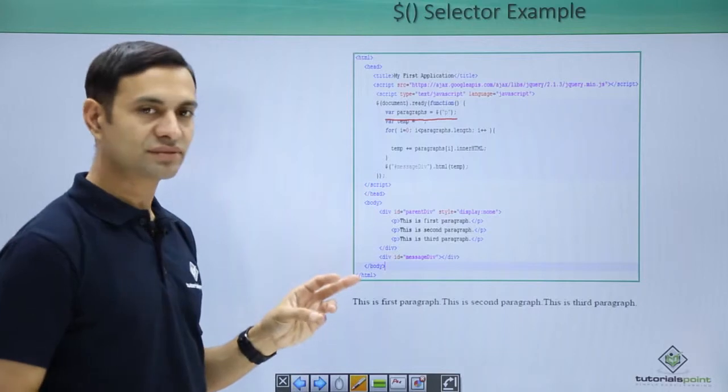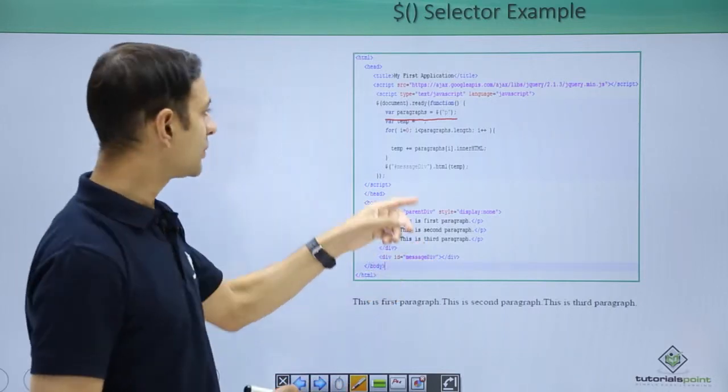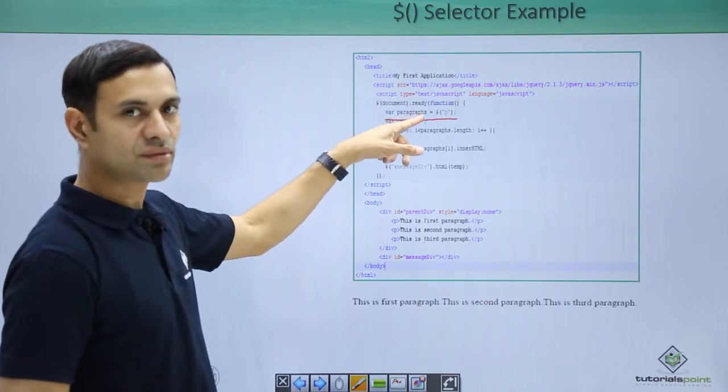So there are three paragraphs: this is first paragraph, this is second paragraph, and this is third paragraph. So all three are now present in this paragraph variable.